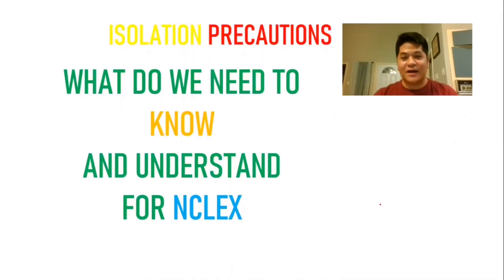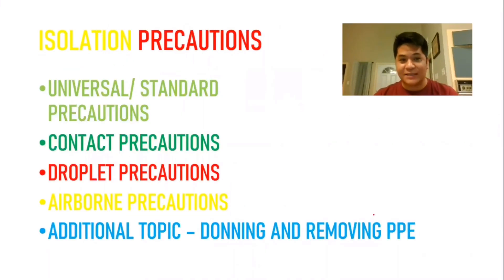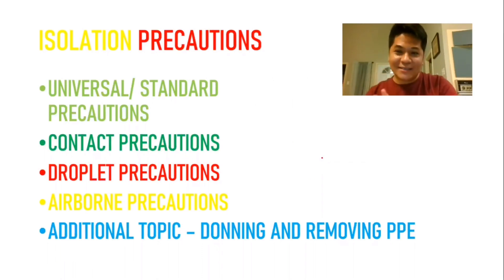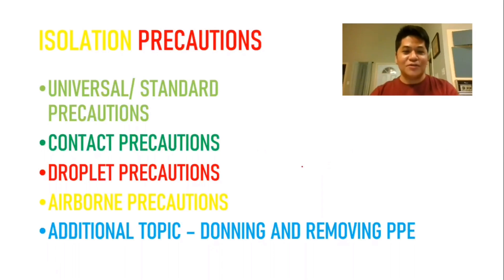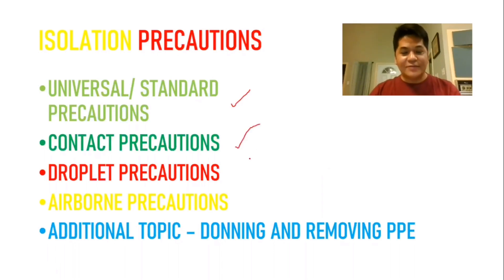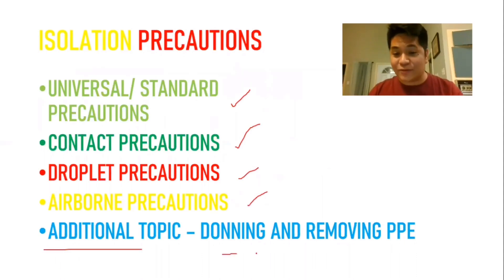Isolation precautions are very important because we're going to protect ourselves from highly contagious diseases that we might acquire if we don't wear personal protective equipment. Today we're going to talk about the standard or universal precautions, contact precautions, droplet precautions, airborne precautions, and additionally the donning and removing of your PPE in order.